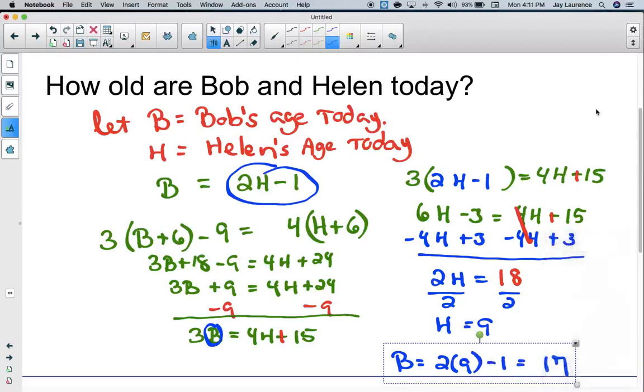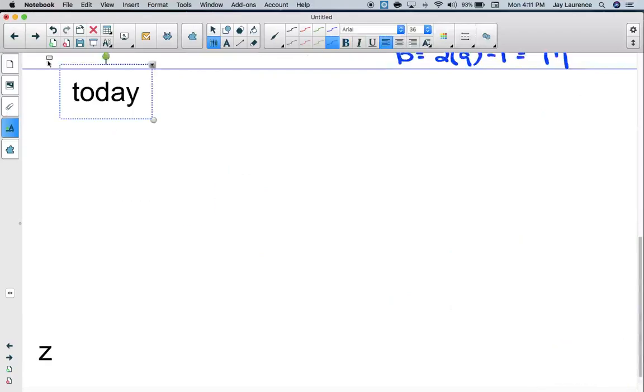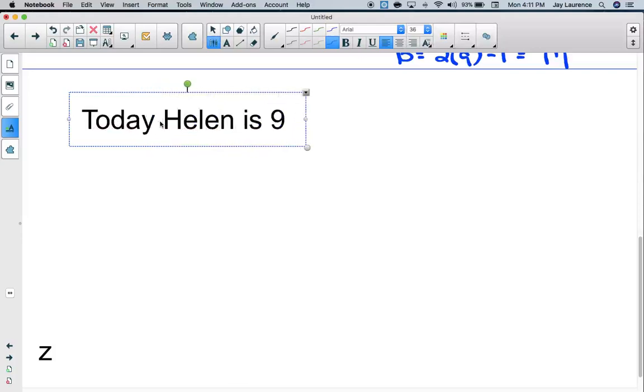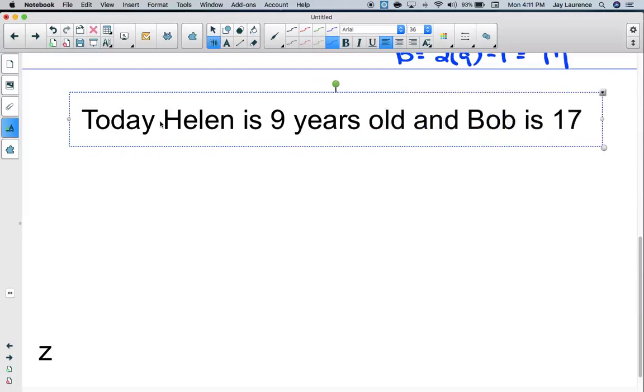Today, Helen is 9 years old and Bob is 17 years old. And there you go.